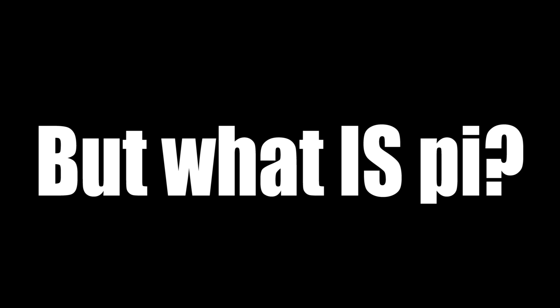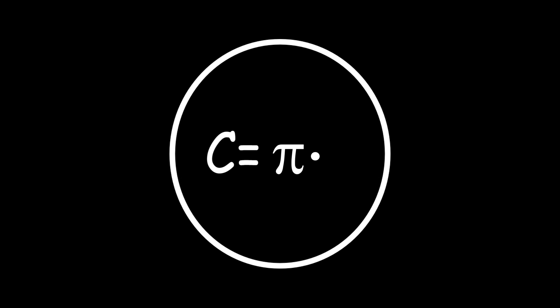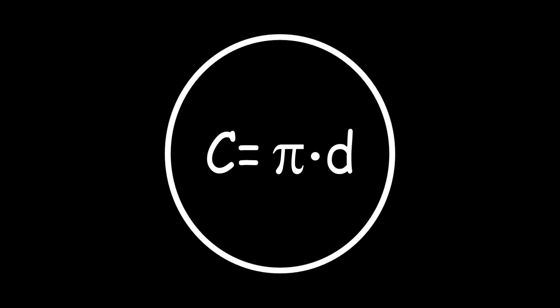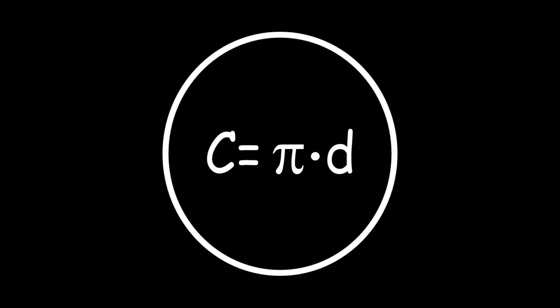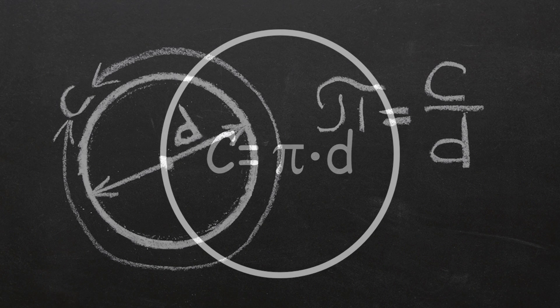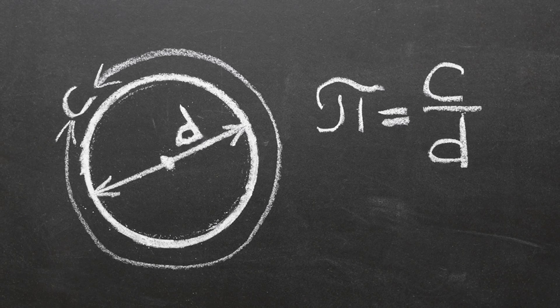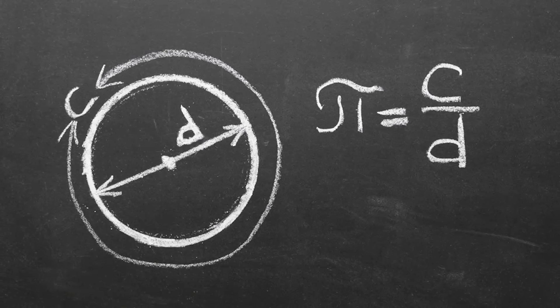But what is pi? Let's start off first with a familiar equation you likely saw in geometry: circumference equals pi times diameter. If we simply isolate pi, the right-hand side equals the quotient of circumference and diameter. That's it — that's the mathematical definition of pi.